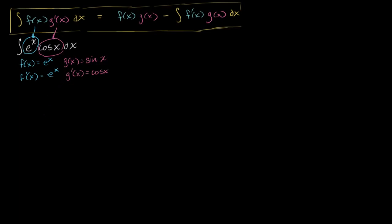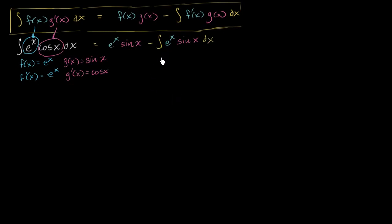Now let's apply integration by parts. This integral is going to be equal to f of x times g of x — which is e to the x times sine of x — minus the antiderivative of f prime of x times g of x, which is e to the x times sine of x dx. It doesn't look like we made a lot of progress — now we have an indefinite integral that involves sine of x.